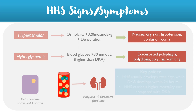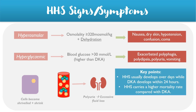There are also a few key points to remember: HHS usually develops over days while diabetic ketoacidosis develops within 24 hours, and HHS carries a much higher mortality rate compared with DKA, so it's important to recognize and treat the condition as soon as possible.